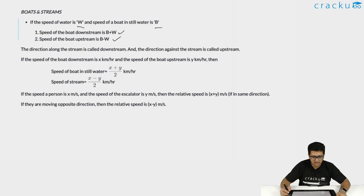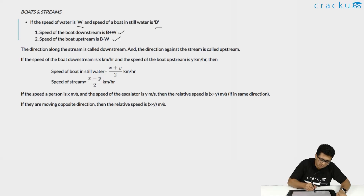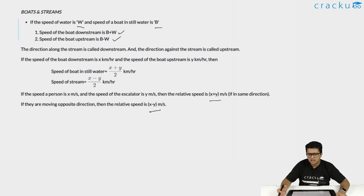If the speed of the boat downstream is x kilometers per hour and the speed of the boat upstream is y kilometers per hour, then speed of boat in still water is (x plus y) by 2 and speed of stream will be (x minus y) by 2. This is just the basic formula which you can derive with B plus W and B minus W. If the speed of a person is x and the speed of the escalator is y, then the relative speed or the overall speed is x plus y in the same direction, and x minus y in the opposite direction. Using these basic formulas, let's look at some CAT questions.